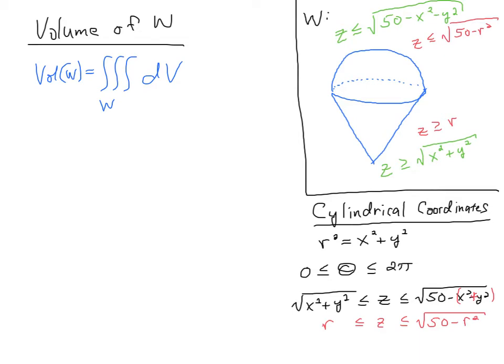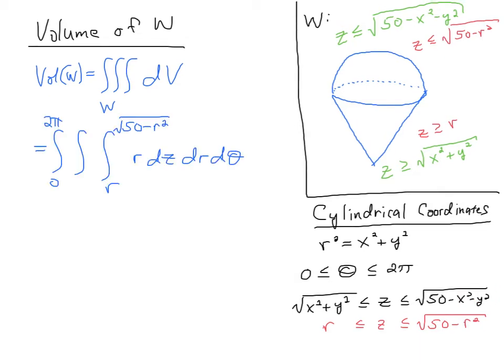Okay, so I have the limits of integration for z and I have limits of integration for theta. I'll need the limits of integration for r. So let's set up that volume integral. And I have everything set up except I don't have my limits of integration for r.